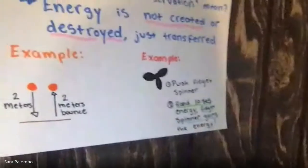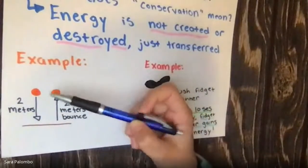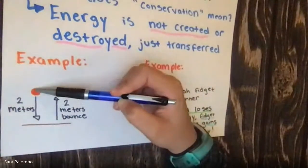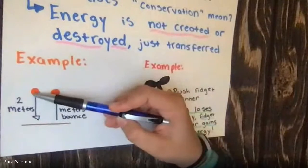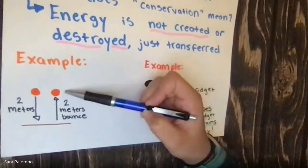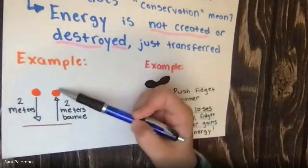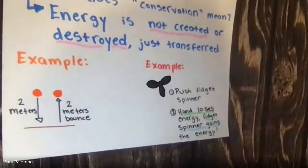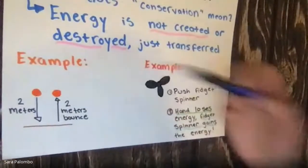Similarly, say we had a bouncy ball and we dropped it from a height of about two meters. If all of the energy was conserved, that ball would hit the ground and bounce right back up to two meters — the same height. That doesn't always happen. It's just that if all the energy is truly conserved, any object will move right back up to the same height that it was dropped at.